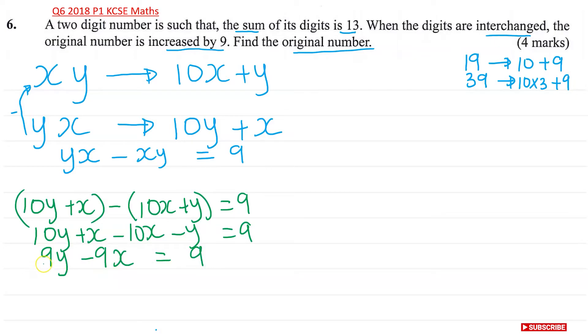Now I have 9 here, 9 there and 9 there. I can divide by 9 throughout and this will give me 9Y divided by 9 is Y. And this will become X. And on the other side, 9 divided by 9 is 1. So I have some sort of an equation here, which I'm going to write it over here. So I have Y minus X equals to 1.